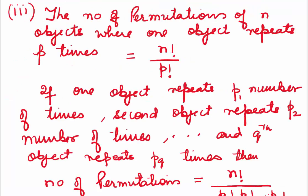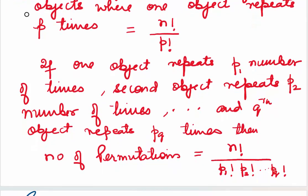Now the third case: the number of permutations of n objects where one object repeats p number of times. We use the formula n! ÷ p!. If more than one object repeats — one object repeating p1 times, a second repeating p2 times, and so on up to a q-th object repeating pq times — then the number of permutations = n! ÷ (p1! × p2! × … × pq!).